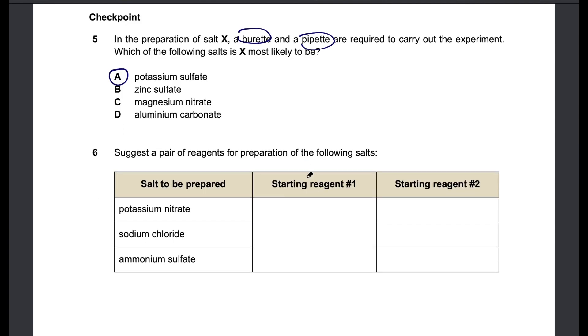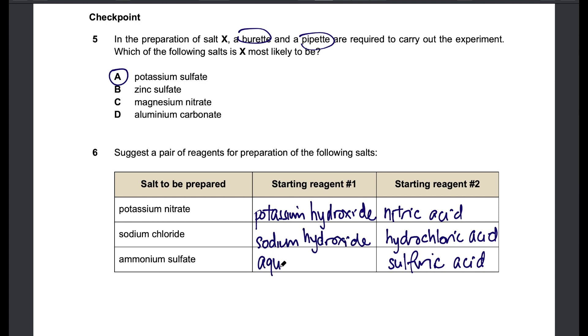Question six: What reagents do we use to prepare the following salts? The anion comes from the acid so this will be pretty straightforward. We'll fill that in first. For the cation, it comes from the alkali. For potassium we use potassium hydroxide. For sodium we use sodium hydroxide. And for ammonium we use aqueous ammonia.